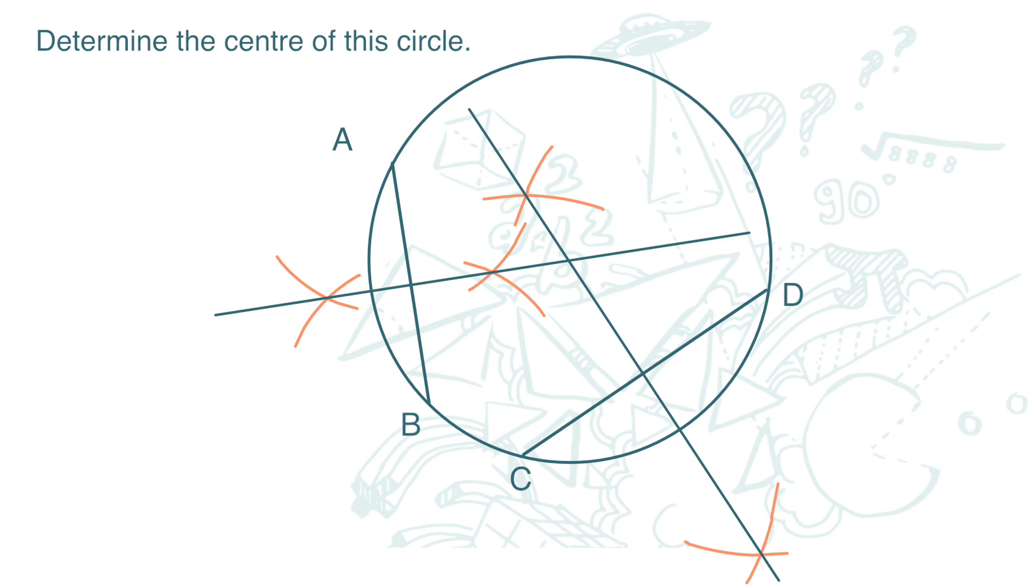Now, here, where the bisectors intersect is the center of the circle.